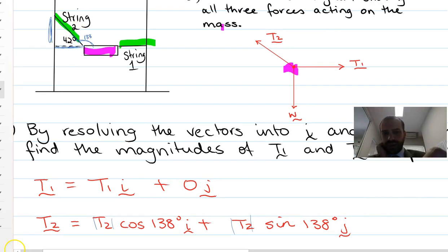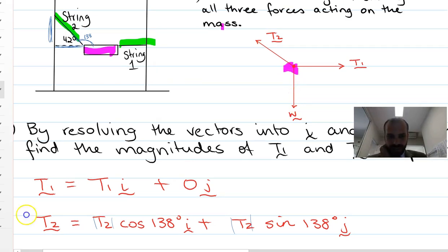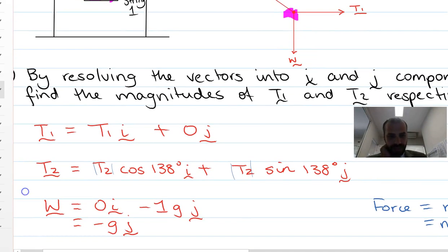Alright, we have a third vector here. We have our weight vector and you can see it's going straight down. So what that means is that our weight vector is going to be zero in the i component because it's not moving left or right. And it's going to be negative one g in the j component. Now the one comes from the weight of the object.